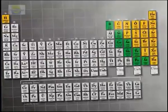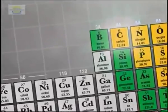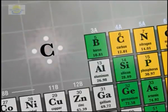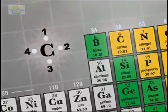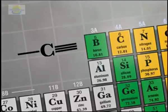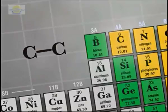At the heart of carbon's versatility is its position on the periodic table of elements. Carbon is tetravalent, meaning it has four valence electrons, so it can form up to four bonds with other atoms. And those bonds can be single bonds, double bonds, or triple bonds. Most often, those bonds are with other carbon atoms.